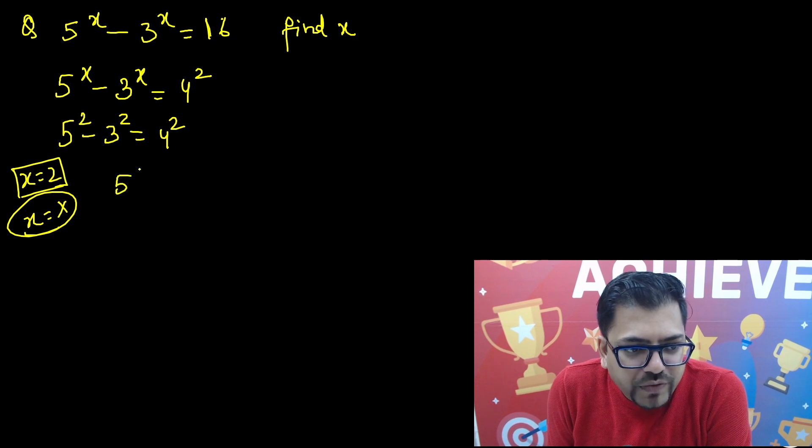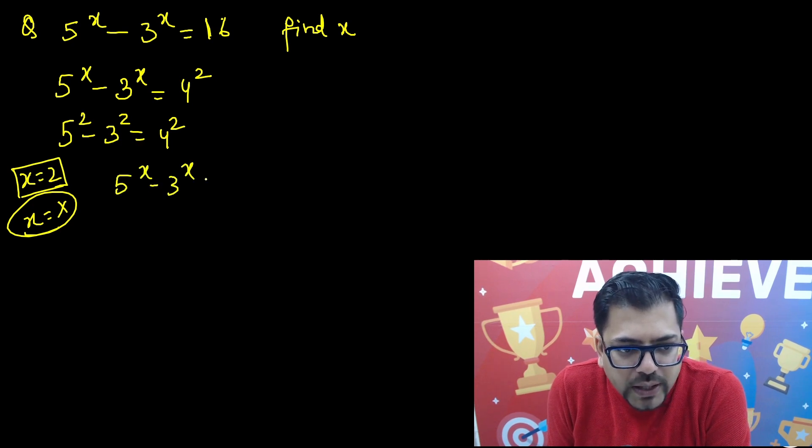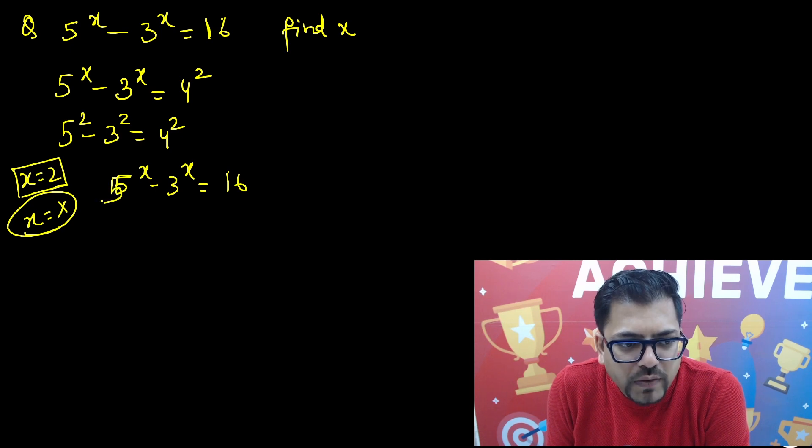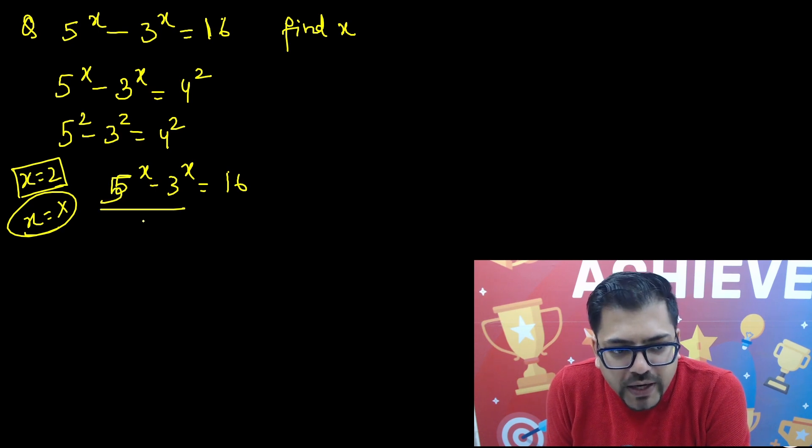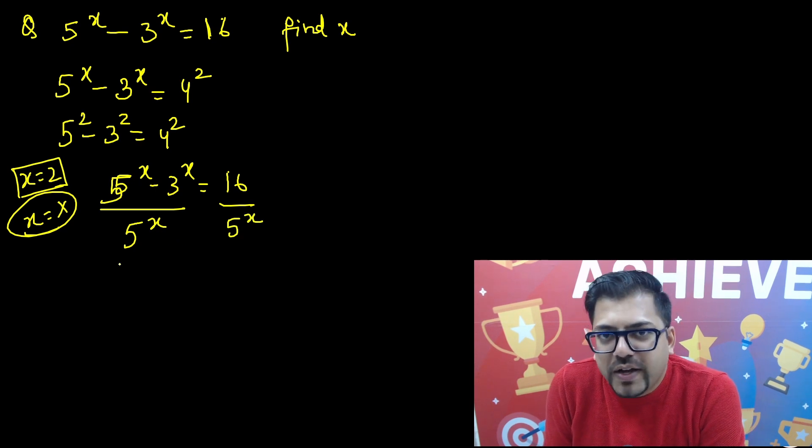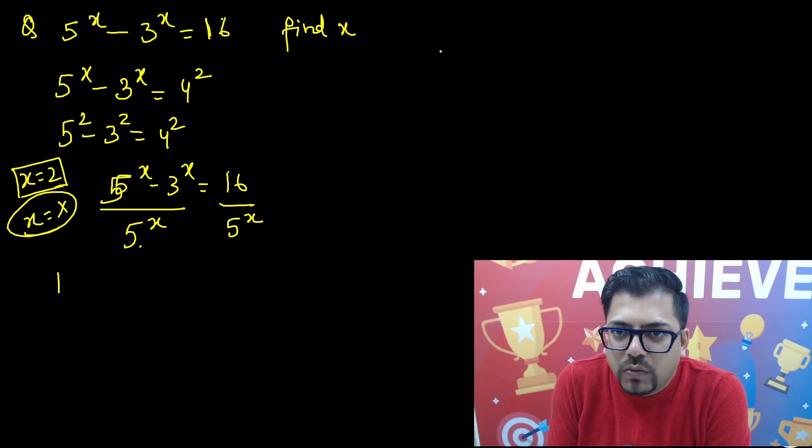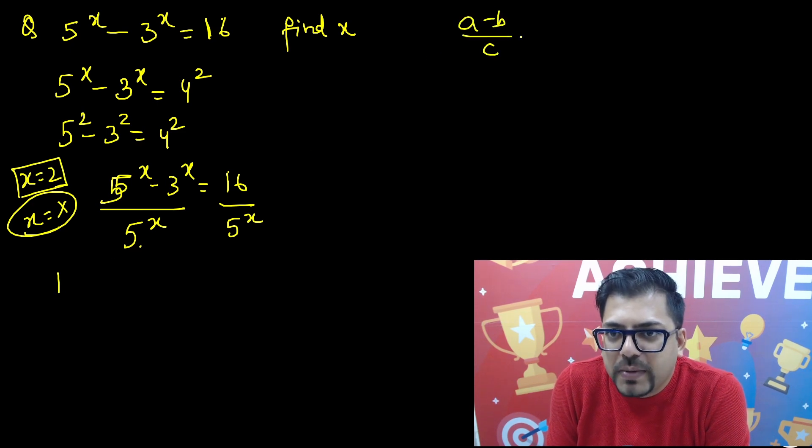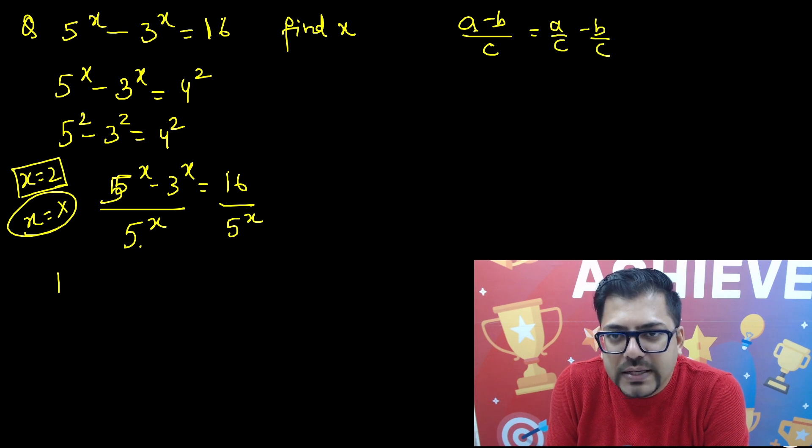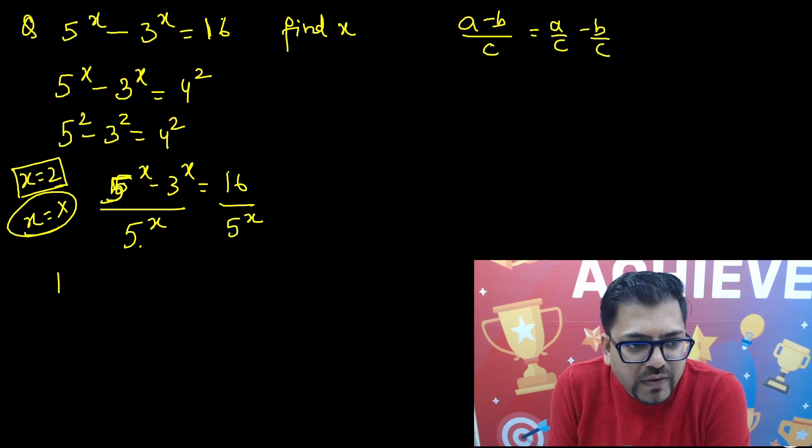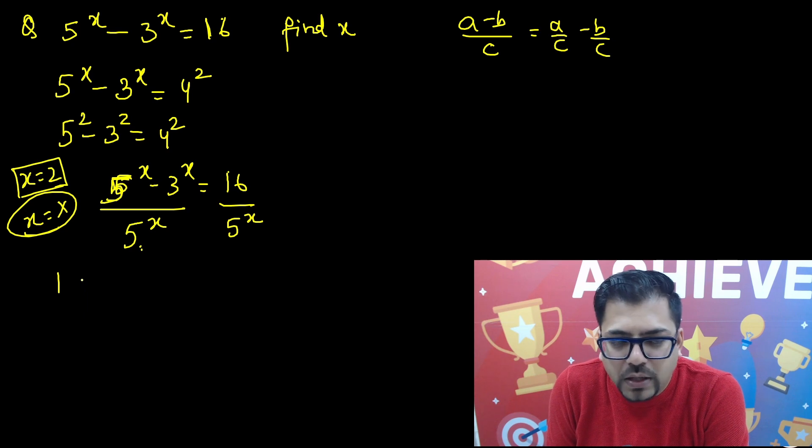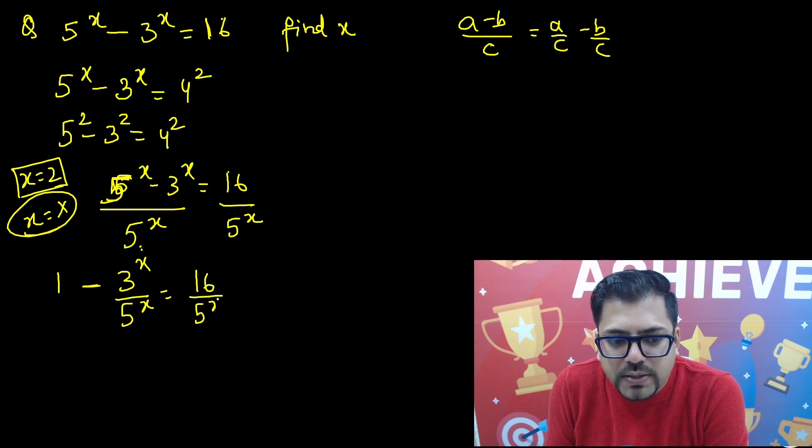We have got this equation 5 raised to power x minus 3 raised to power x equals 16. Now I am trying to divide both sides by 5 raised to power x. I will tell you why am I doing this. So 5^x by 5^x will be 1. Because a minus b divided by c is nothing but a by c minus b by c. This is 1 minus 3^x upon 5^x, that equals 16 upon 5^x.